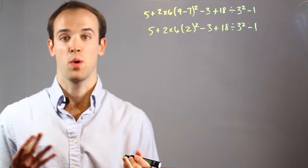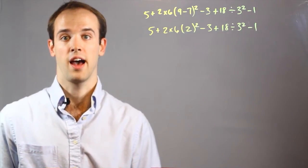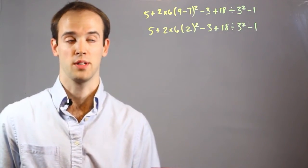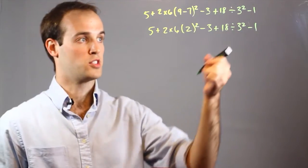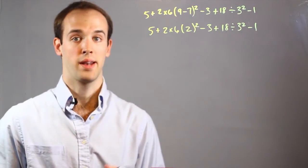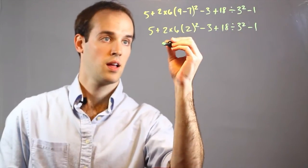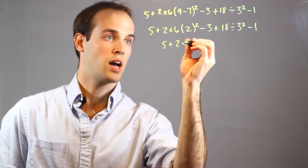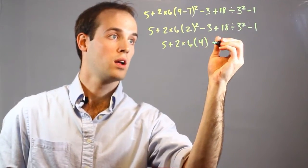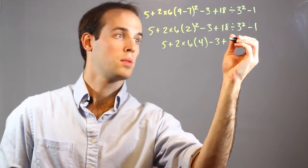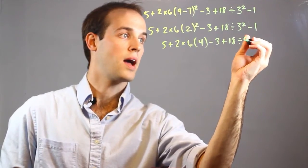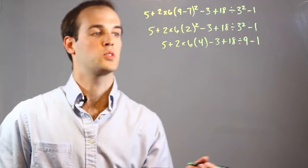And now that I have everything within parentheses simplified, I can move on to the next step, which is exponents. And you can see I have two right here, I have a 2 squared and a 3 squared, so my next line, I'm going to take care of those. 5 plus 2 times 6, quantity 4, minus 3, plus 18, divided by 9, minus 1.